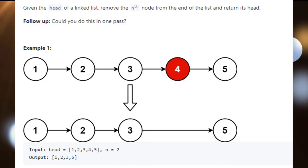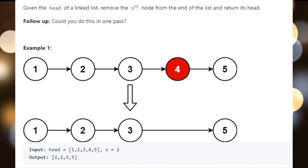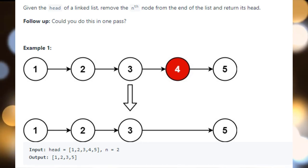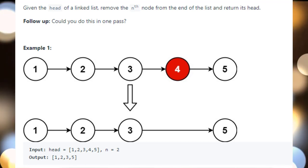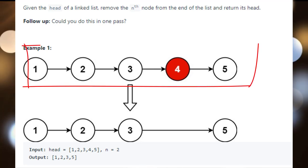We are going to implement a linked list question and its solution. In this question, it has asked us to remove a node that is nth from the last, which means that we have to remove the node counting from the end, not from the beginning.